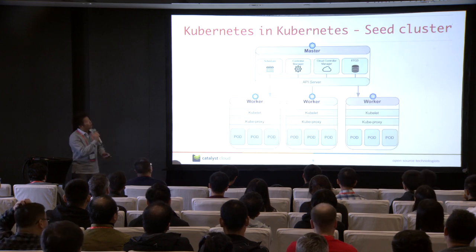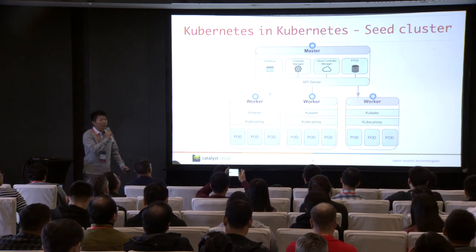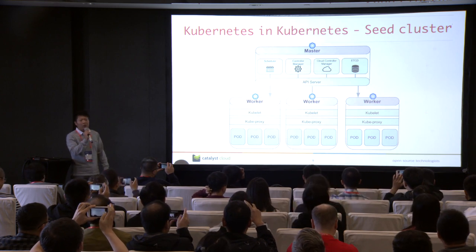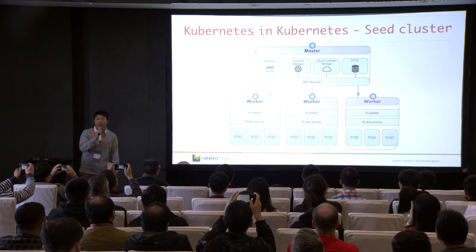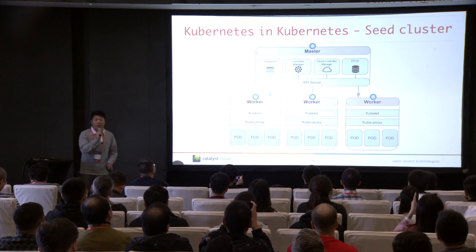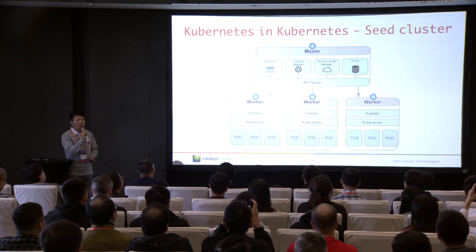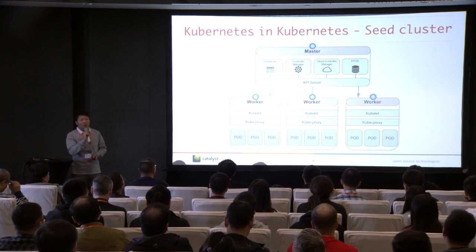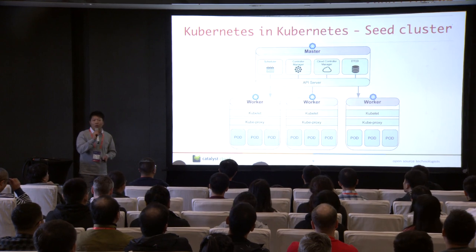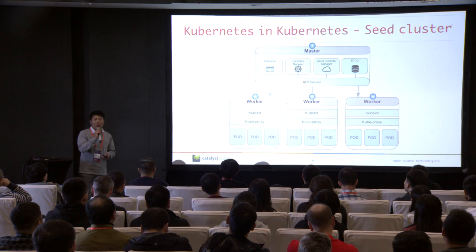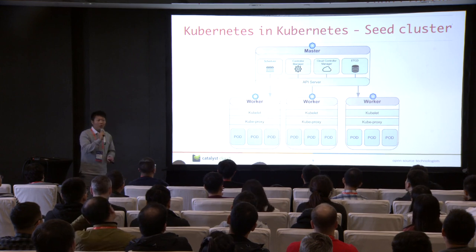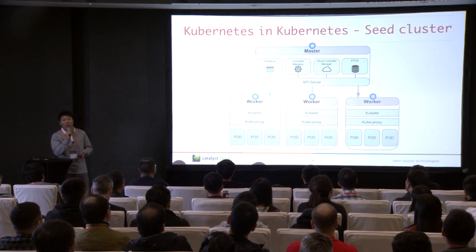As a result, in order to solve some of the problems we talked about, we are introducing a new driver in Magnum to manage Kubernetes in Kubernetes. In this deployment model, there is a cluster called the seed cluster, which should be created and managed by the cloud administrator and is transparent to end users. The seed cluster is nothing else but a normal Magnum cluster, but it's up to the cloud admin to decide how many nodes should be created, and it still has the capability of auto-healing, auto-scaling, and rolling upgrade — all the functionalities that Magnum provides.